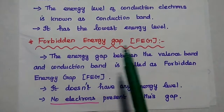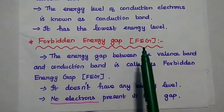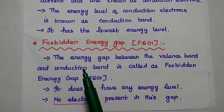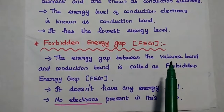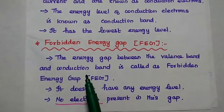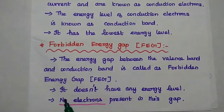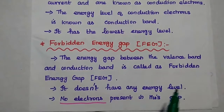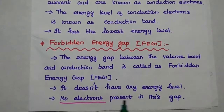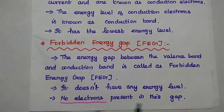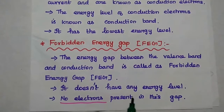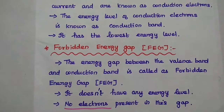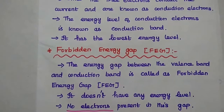The next one is the forbidden energy gap, simply FEG. This is the energy gap between the valence band and the conduction band. It does not have any energy level because there are no electrons present in this gap. These are the three levels in the band structure.